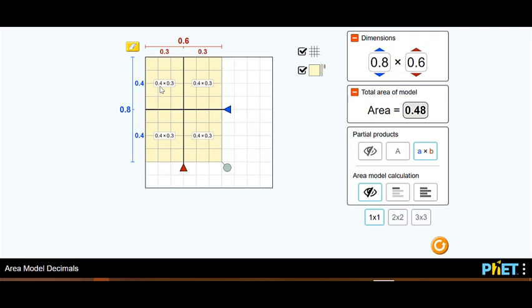I would see that I had 0.4 times 0.3 for each of these rectangles. I could multiply each of those individually and then add them together, and I would get the same area of 0.48.